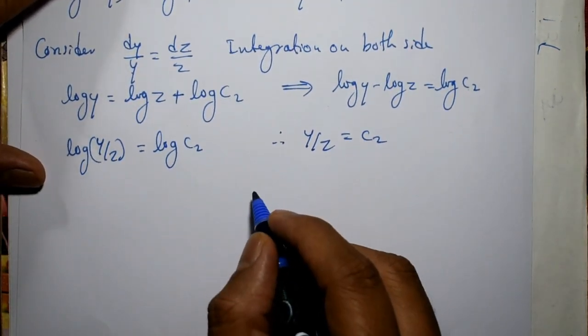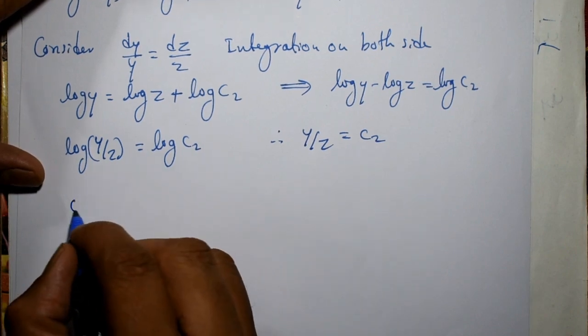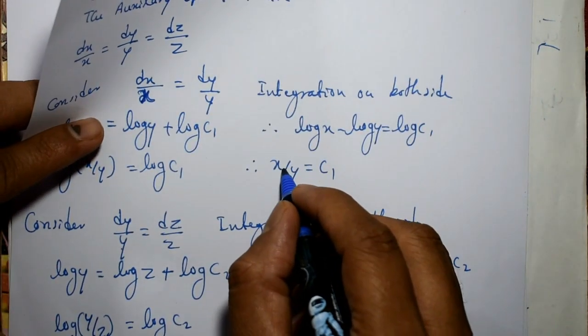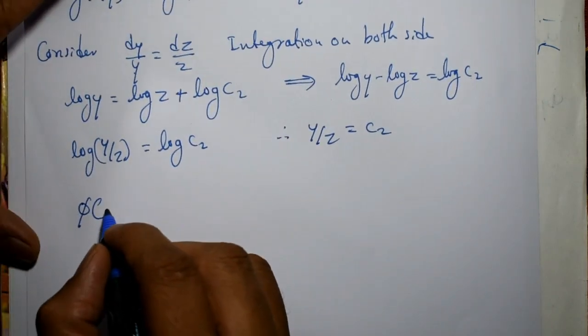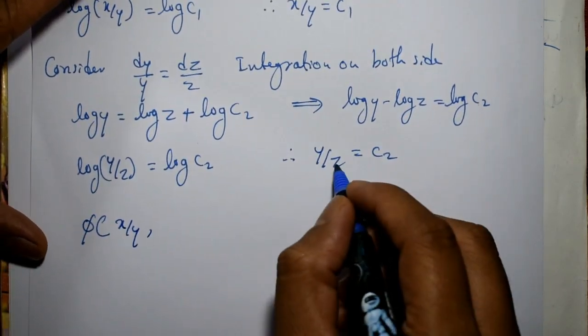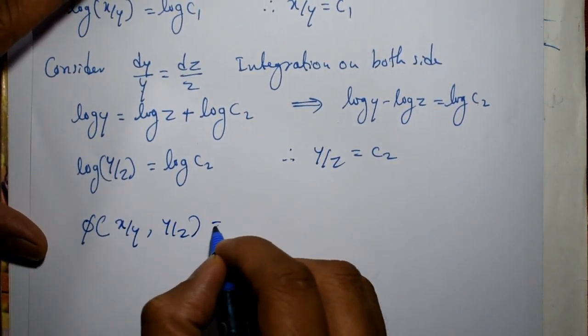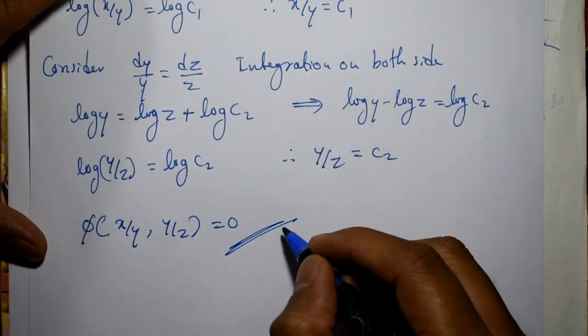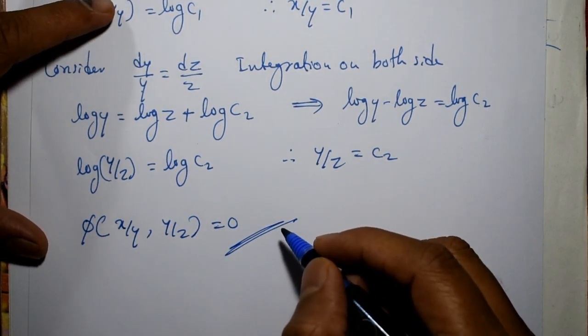Now general solution of the PDE is φ of, taking these two, φ(x/y, y/z) equal to 0. Now this is the required general solution of the Lagrange PDE.